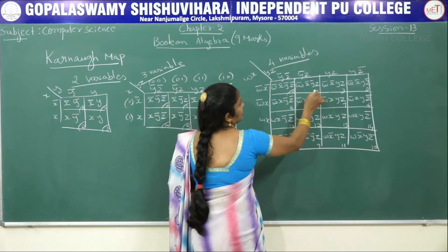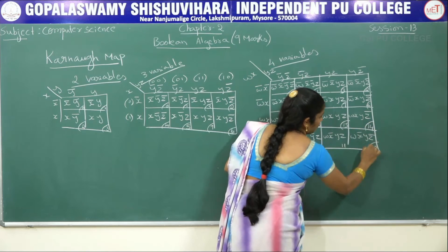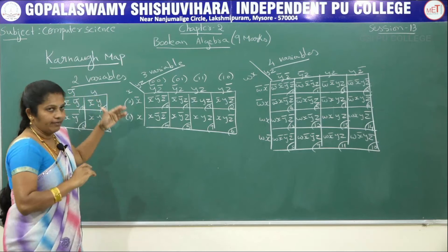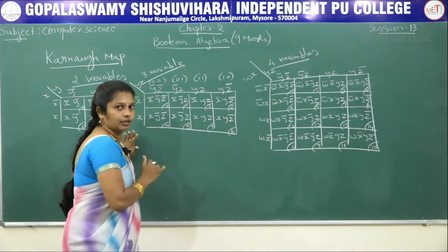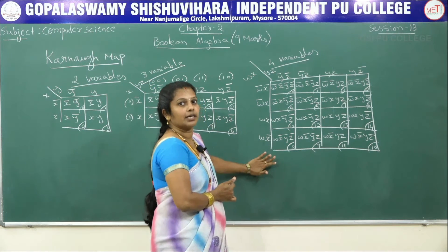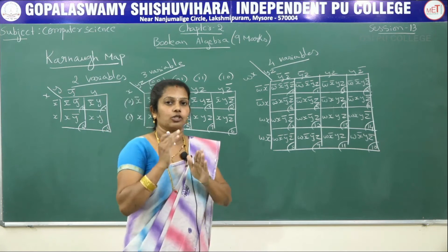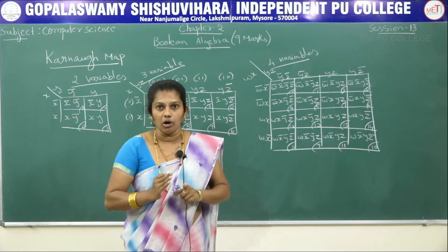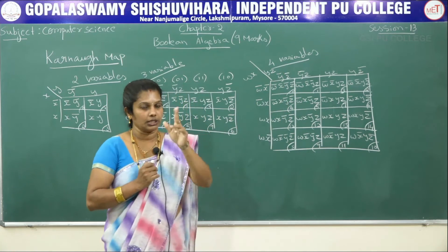Now this represents the designation numbers for the K-map. This generally represents the Karnaugh map for two variables, this represents the Karnaugh map for three variables, and this represents the Karnaugh map for four variables. For five or six variables, depending upon that you will get the corresponding Karnaugh map. First step to solve any equation: identify how many variables we have, then depending upon that write down the cells, their values and positions.